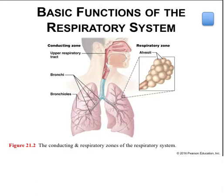The respiratory tract is classed functionally into conducting and respiratory zones. The tubes of the conducting zone are conduits through which air travels on its way into or out of the body—inhaled or inspired if traveling in, exhaled or expired if traveling out. The air is filtered, warmed, and moistened as it travels through the zone.